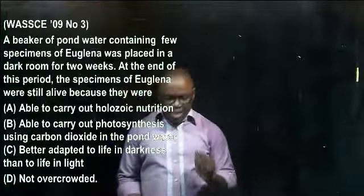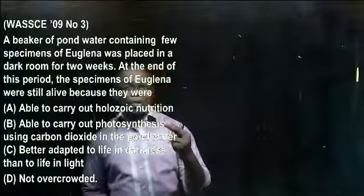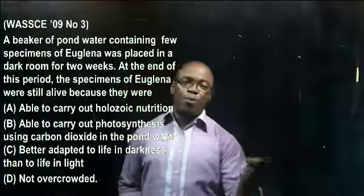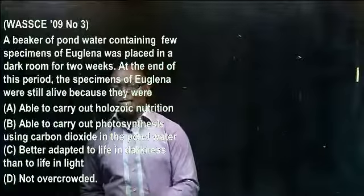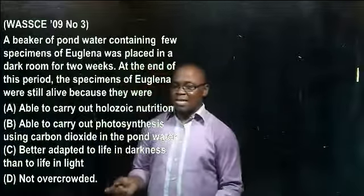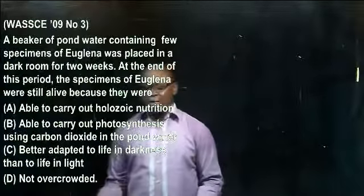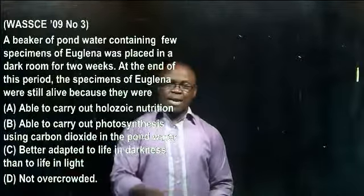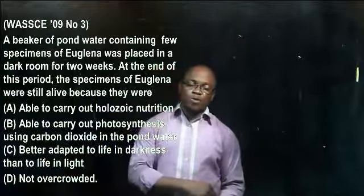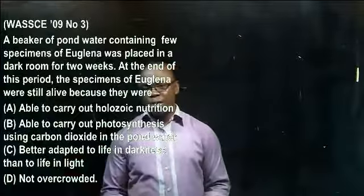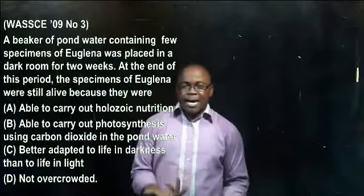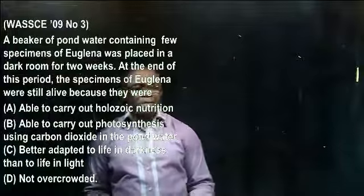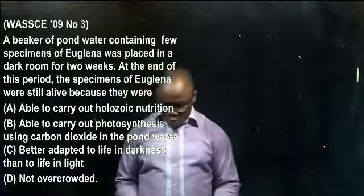The question states that the Euglena was placed in a dark room for two weeks and was still found to be alive. Since it was not photosynthesizing in the dark, it had to switch over to the other mode of nutrition — the heterotrophic mode, which is the holozoic type, feeding like an animal. So the reason it was still alive was because it carried out holozoic nutrition — option A.